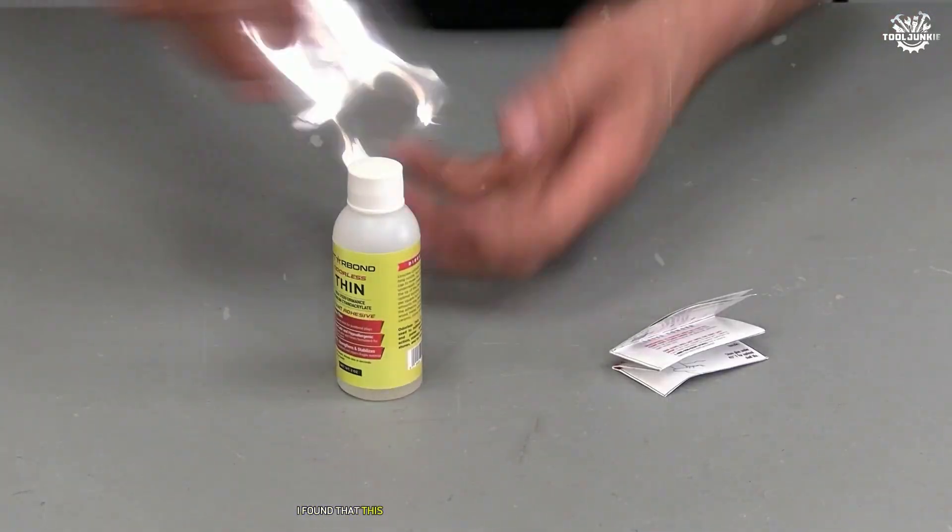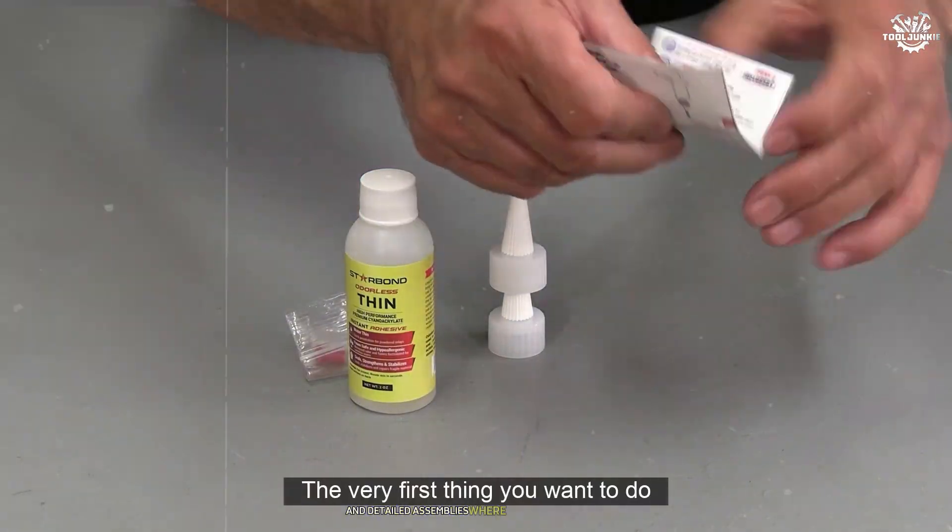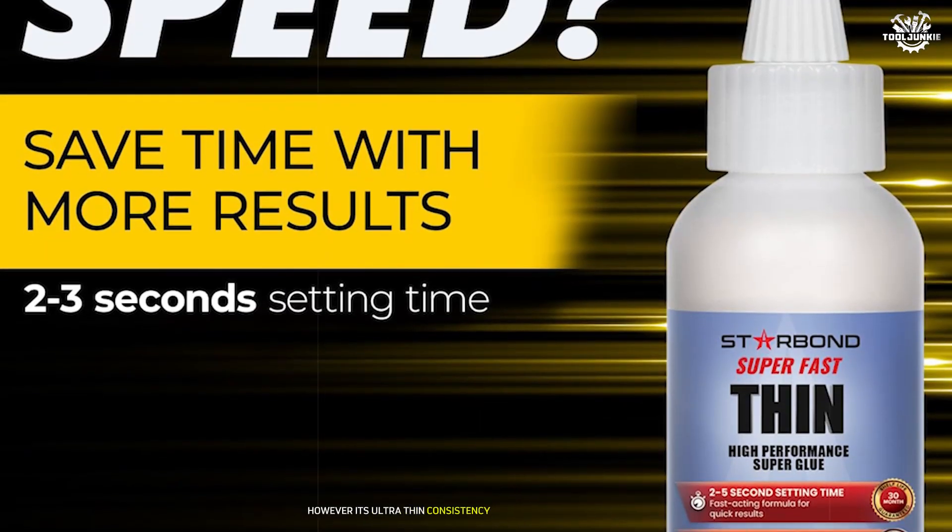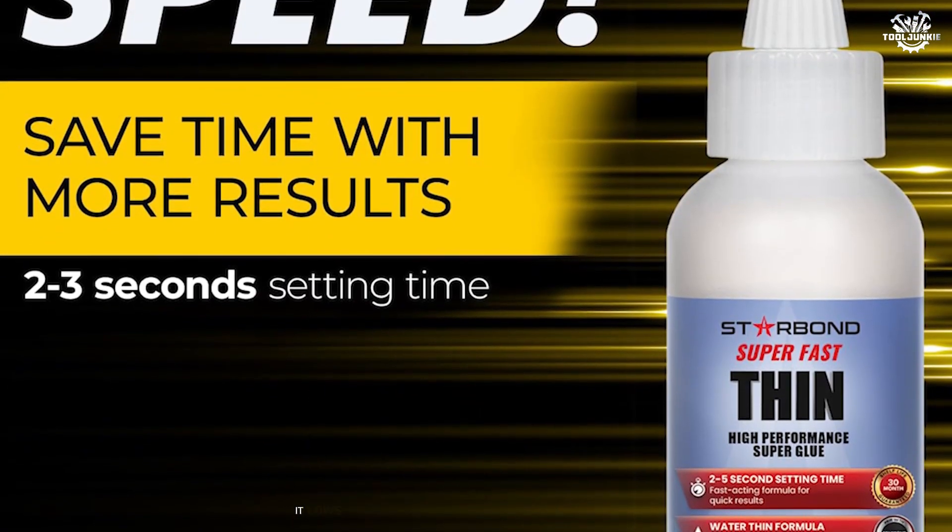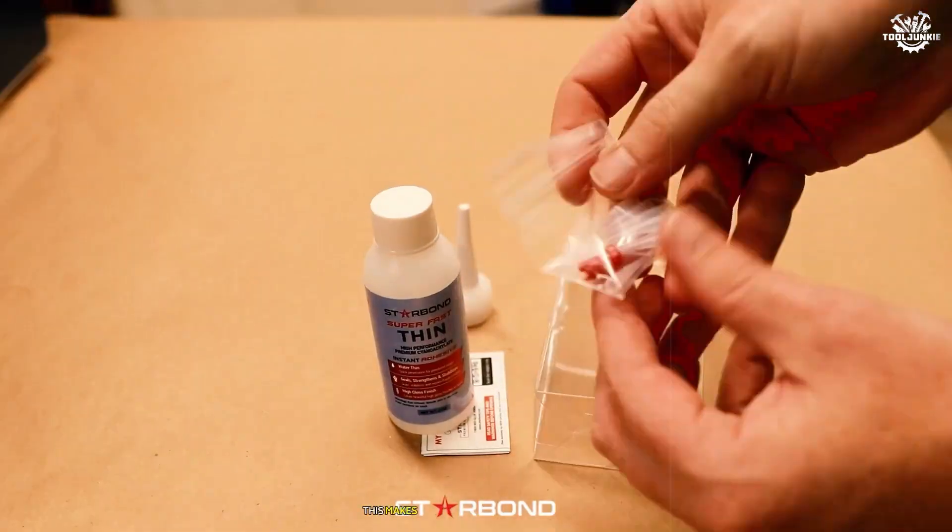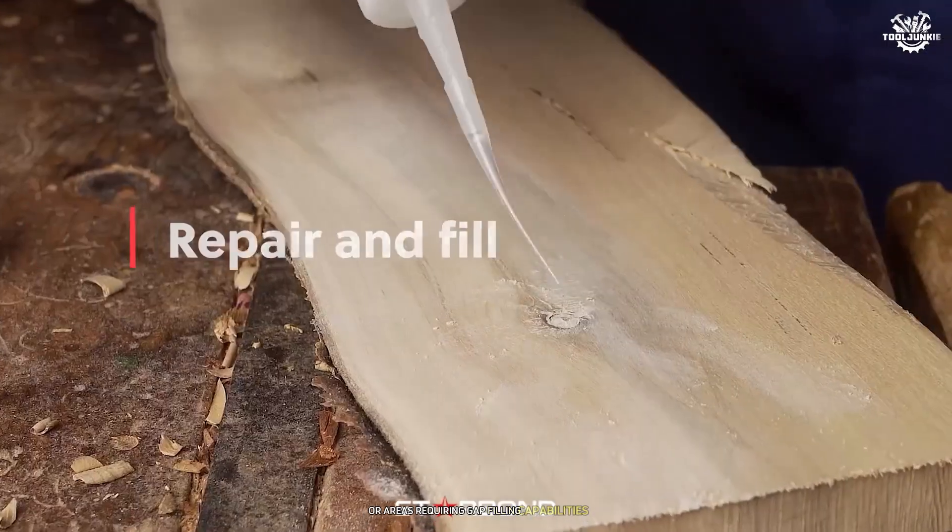During testing, I found that this glue works exceptionally well for intricate repairs and detailed assemblies where accuracy is crucial. However, its ultra-thin consistency can be challenging to manage. It flows quickly and may run uncontrollably if not applied carefully. This makes it less suitable for larger joints or areas requiring gap-filling capabilities.